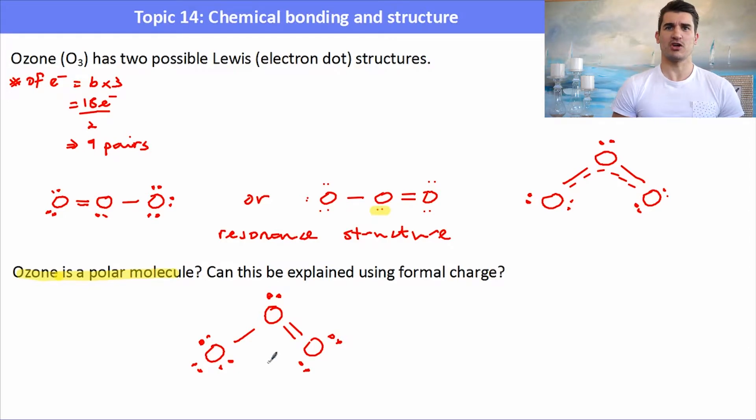The formal charge on the oxygen atom here will be the number of valence electrons 6, take away half the number of electrons in the outer shell, take away a half times the number of bonding electrons plus the number of lone electrons gives me a formal charge of zero. I can calculate the other formal charges in the same way. The oxygen with the single bond is minus one and the oxygen at the top will have a formal charge of plus one.